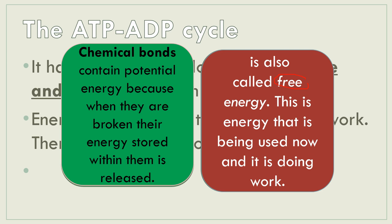Regarding potential energy, keep in mind that chemical bonds contain potential energy, because when they are broken, the energy stored within them is released. For example, in ATP, we have phosphate groups and the chemical bonds connecting them — it is in those chemical bonds where our potential energy is stored.